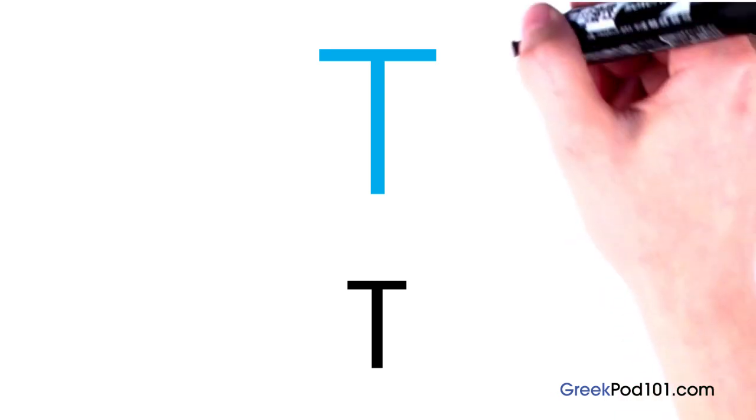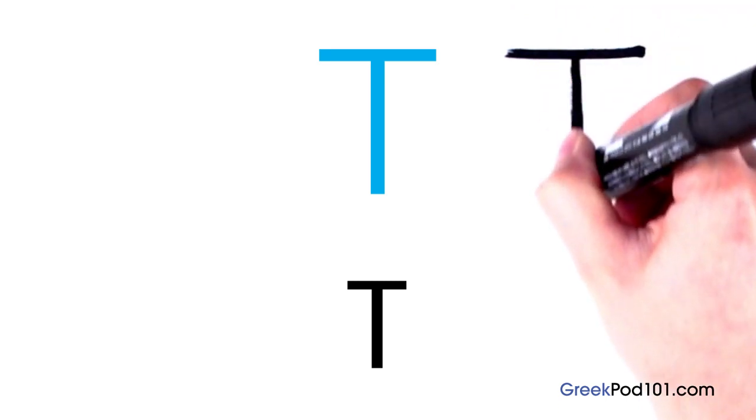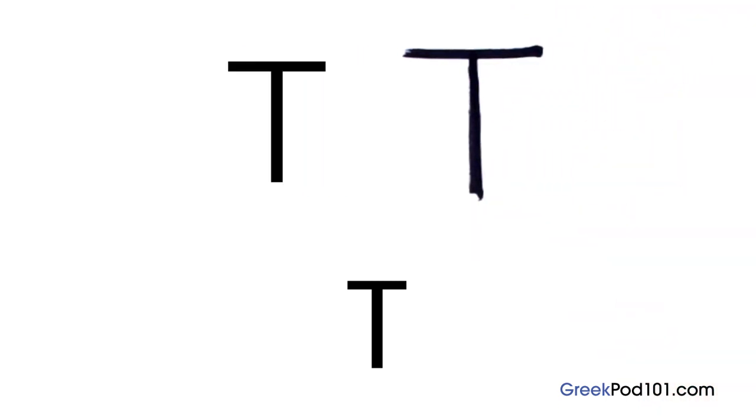Here is Taf in uppercase. You should already be an expert at this shape. It is handwritten like this. Taf. And this is what the lowercase Taf looks like when it's printed. I think it's easier than the lowercase T in English since it's just an uppercase T but smaller.